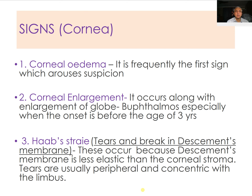The signs of congenital glaucoma include: corneal edema, which is frequently the first sign to arouse suspicion, and corneal enlargement. As the eyeball enlarges, the cornea also increases in size — this occurs with enlargement of the globe and buphthalmos, especially when onset is before the age of three years when the sclera is more elastic and can enlarge in size.